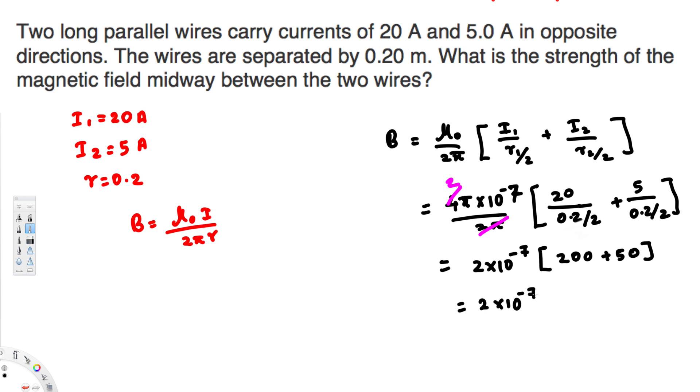2 × 10⁻⁷ multiplied by 250 gives you 500 × 10⁻⁷ tesla. And if you want to give this one in micro tesla, you can move the decimal to the other side, that's going to make this one 50 × 10⁻⁶ tesla, and that is equivalent to 50 micro tesla. And that's going to be our final answer. I hope this helps. Thanks for watching.